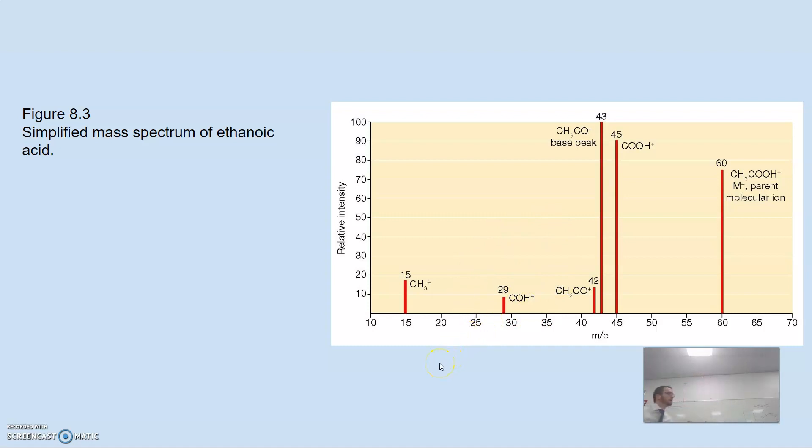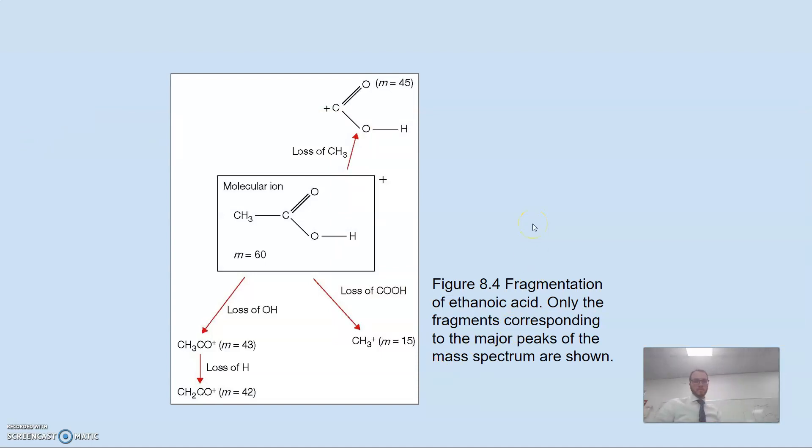Something else to look out for would be, what's 15 plus 14? 29. Normally a 29 peak wouldn't necessarily correspond to this COH, but 29 would correspond to CH3CH2 fragment for longer hydrocarbons. If we lose COOH, I get my CH3 and there's my 15. If I lose my OH, I get my 43. I can lose one of those hydrogens and I would get 42. I want to consider all the different ways in which I can cut my molecule up. Some fragments are going to be more abundant than others.